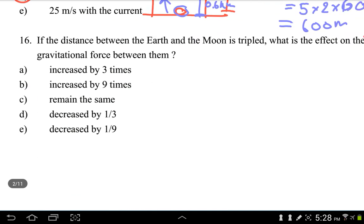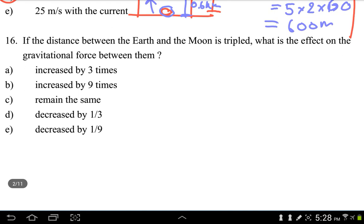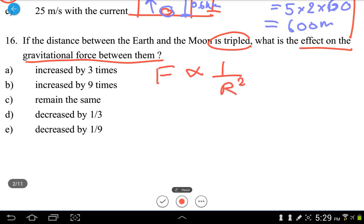Okay, let's look at number 16. Number 16 says if the distance between the Earth and the Moon is tripled, what effect will it have on the gravitational force between them? All right, we know that force is actually inversely proportional to the distance squared. In this case,